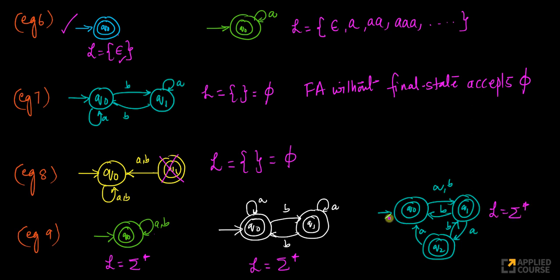Now look at this example with an unreachable state. From q0, you will never reach q1. So this is equivalent to just q0 with all transitions, and the language accepted is sigma star. If you have a finite automaton with all transitions present and every state is a final state — whether it has one, two, or three states — the language accepted is sigma star.